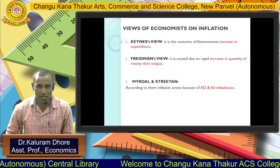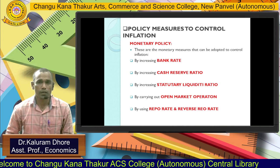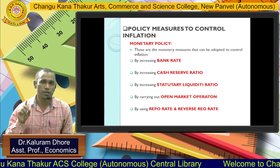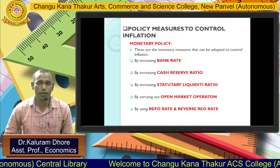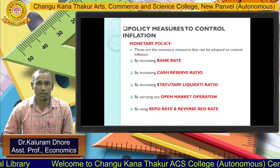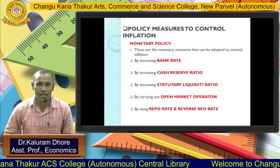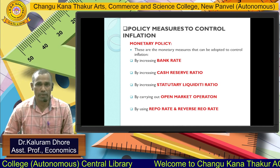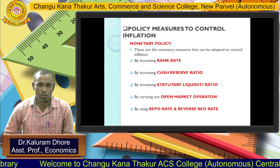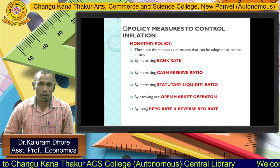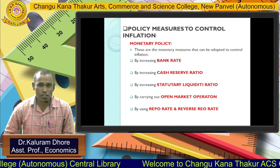These three economists pointed out their thoughts on why inflation increases in any economy, whether developed or underdeveloped. Regarding policy measures to control inflation, there are two: monetary policy and fiscal policy. Under monetary policy, which is related to the RBI — the Reserve Bank of India, the central bank of our country — they use quantitative credit control instruments. The first is the bank rate: by increasing the bank rate, when RBI wants to control prices, other commercial banks automatically have to increase their lending rates.